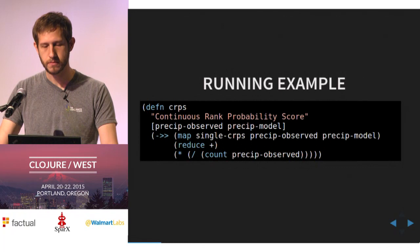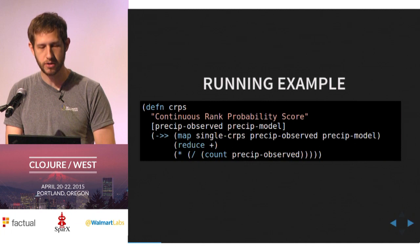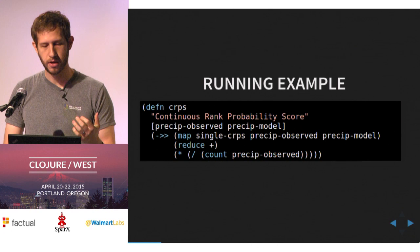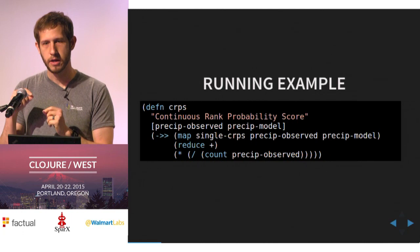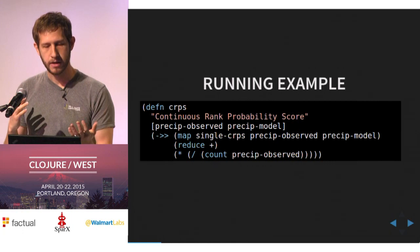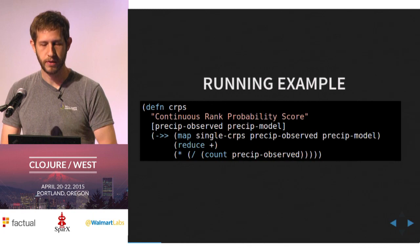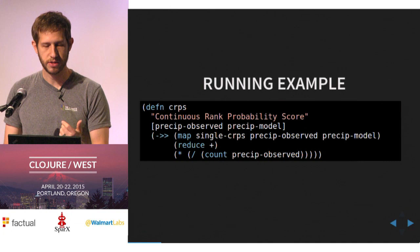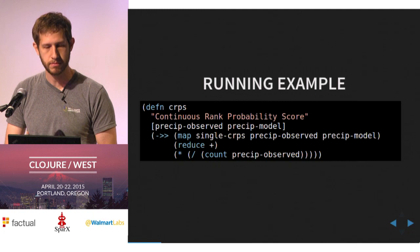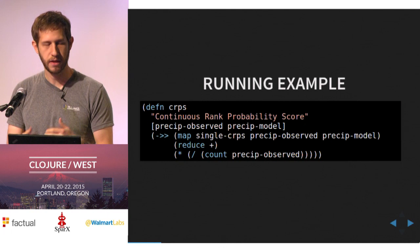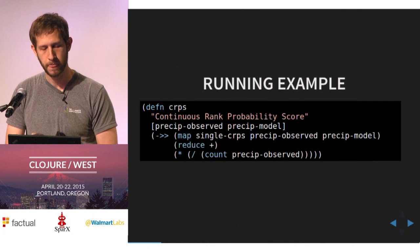The running example is a computation we do at the Climate Corporation to help measure our models. Suppose we have a time series of observed data and a time series of model output, but the model output doesn't produce just a single variable — it produces a distribution, a bunch of samples. We want to compare how good our model was given that data. For each time step, we compare the observed to our model using this CRPS function. We map CRPS for each time step between the observed and model output, then reduce by plus and scale by the inverse of the number of data points to get an average.